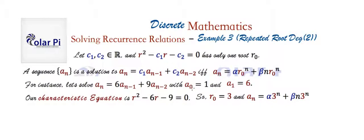But since we know a 0 is 1 and a 1 is 6, then we're seeking to solve for alpha and beta and therefore find a particular solution. Well, fine. Let's use the fact that a 0 is 1 to see that alpha has to be 1.